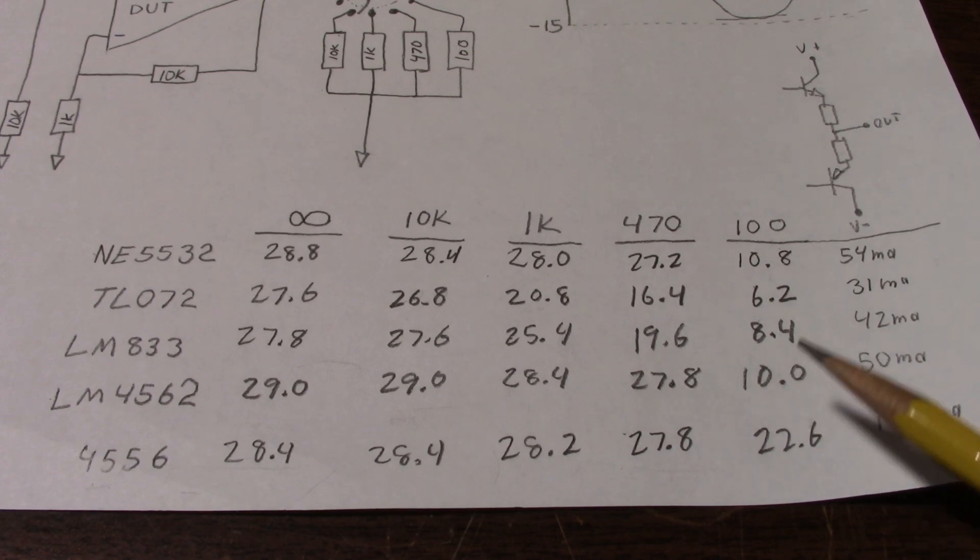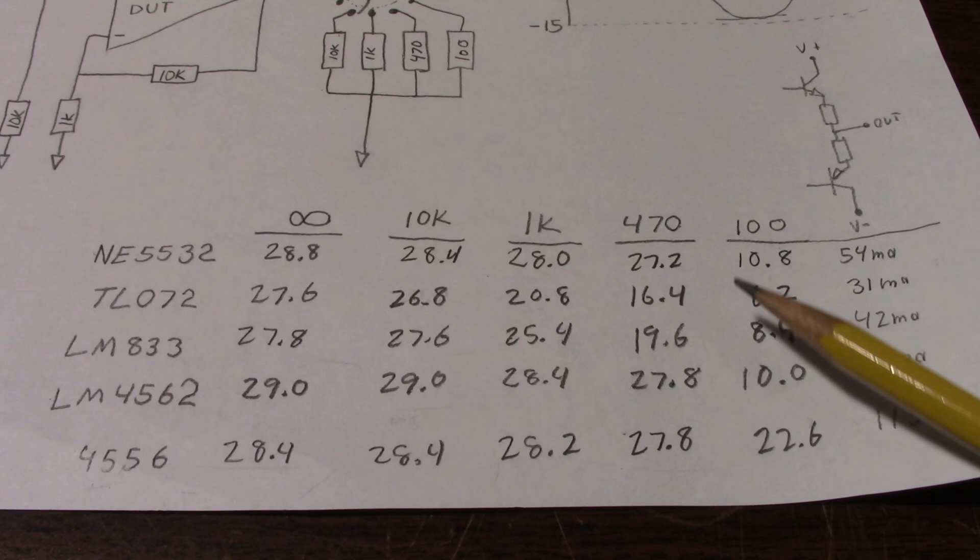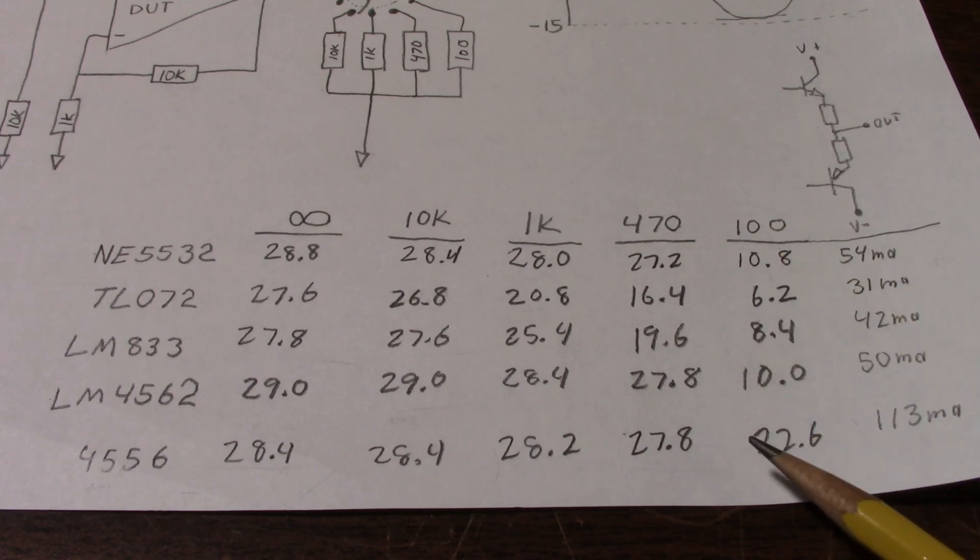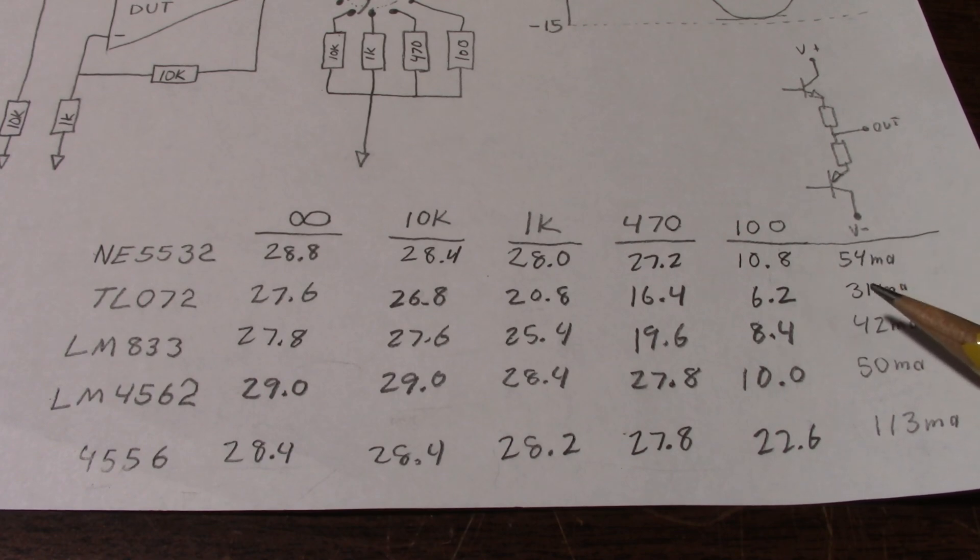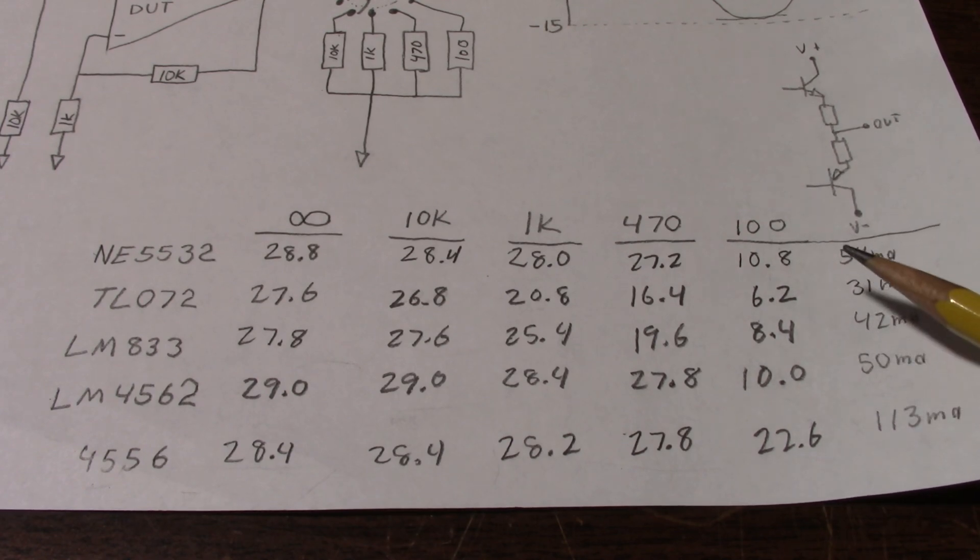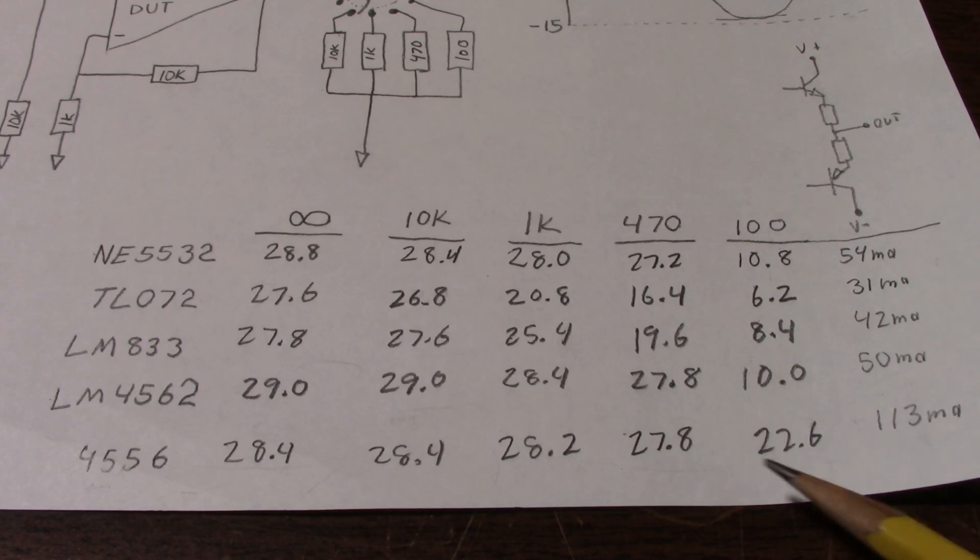So at least under this condition you can see what their maximum output current is, and probably limited by the current limit circuit. So you can see that the 4556 is able to deliver a lot more current than the other chips.